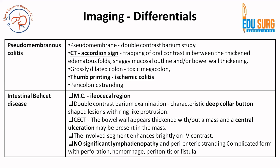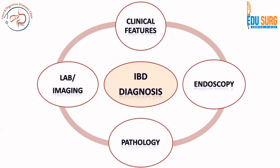For intestinal Behçet's disease — we have already seen the most common site is the ileocecal region. It has deep ulcers. In Behçet's disease, the lesion has deep collar-button ulcers with ring-like protrusion. The involved segment enhances brightly on IV contrast and does not have significant lymphadenopathy or perienteric stranding. Complicated forms can present with perforation, hemorrhage, peritonitis, or fistula, but these are rare. On CT, the bowel wall appears thickened and there may or may not be a mass; if there is a mass, there will be central ulceration. The most common site is the ileocecal region and the key finding is deep collar-button ulcers with ring-like protrusion.